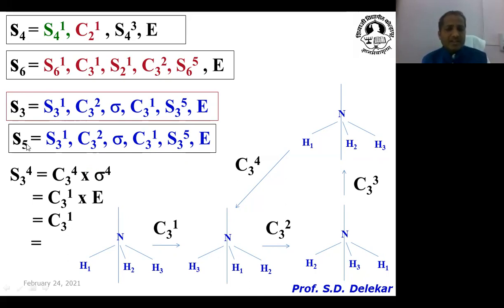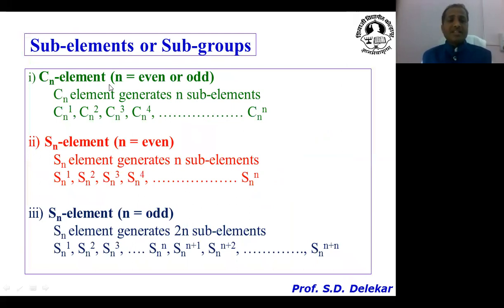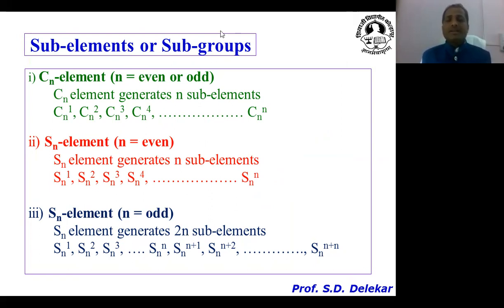For S5, there are 10 subelements: S5¹, S5², S5³, S5⁴, S5⁵, S5⁶, S5⁷, S5⁸, S5⁹, and S5¹⁰. This concludes the discussion on subgroups or subelements associated with the Sn element when n is even or odd. To summarize: when Cn or Sn has n even, there are n subelements; when Sn has n odd, each Sn element generates 2n subelements. Thank you so much.